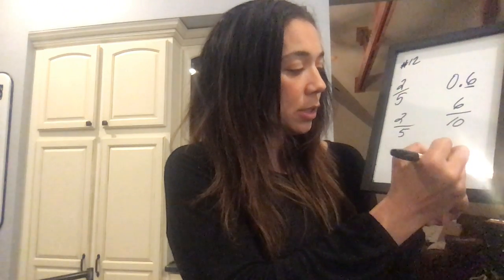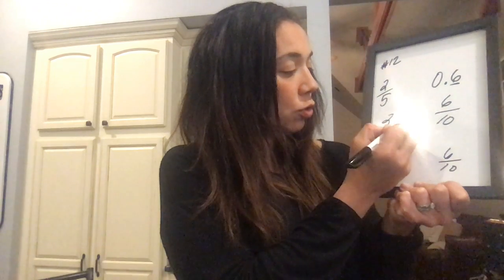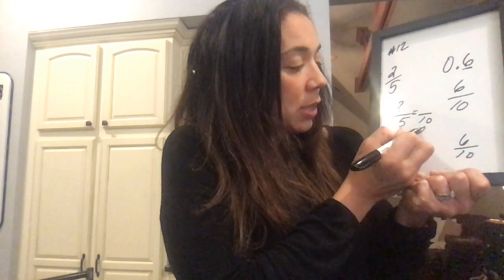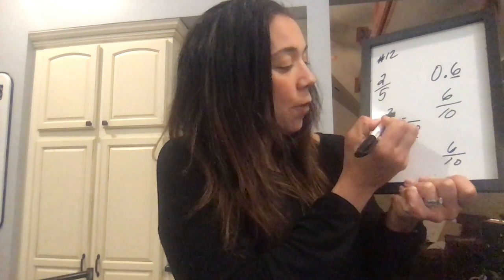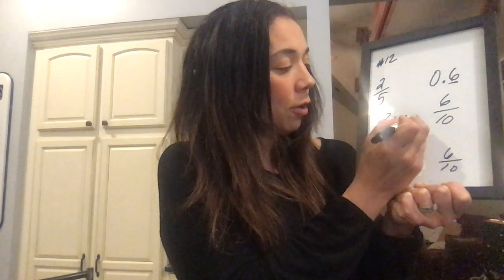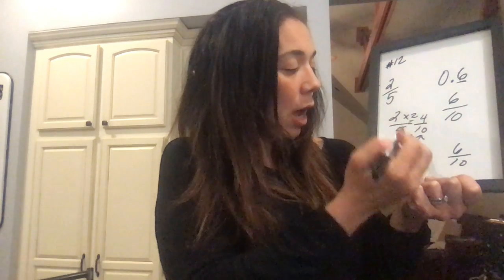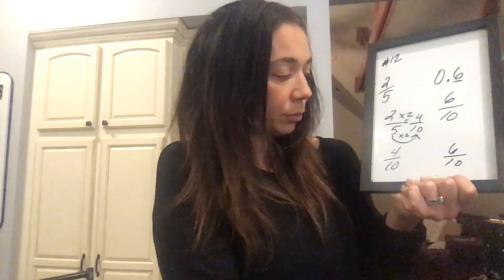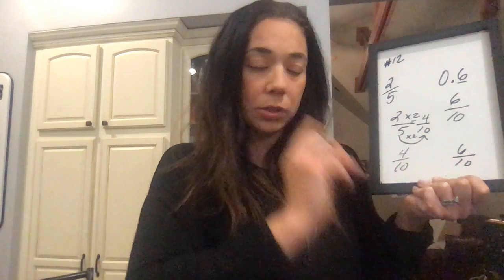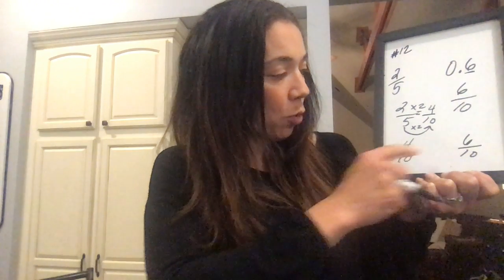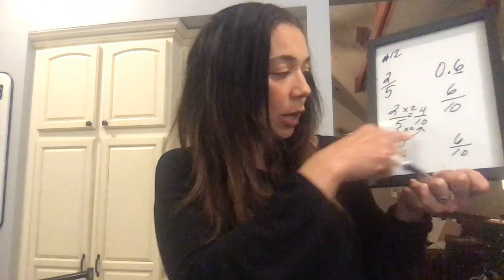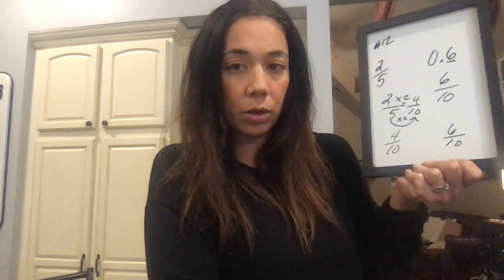So 6 tenths would stay 6 tenths, and we're going to make 2 fifths into a denominator of 10. How do we get from 5 to 10? We multiply by 2. If we multiply by 2 down here, we have to multiply by 2 up here, and we get a 4 in the numerator's place. So 2 fifths actually becomes 4 tenths. These are equivalent fractions — they mean the same exact thing, they just have different denominators.